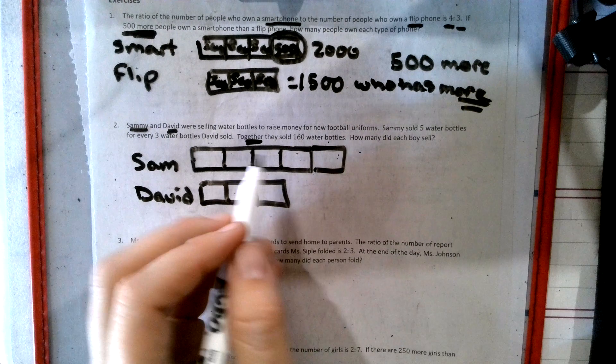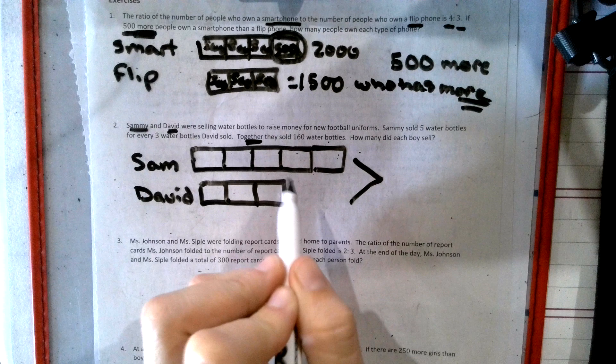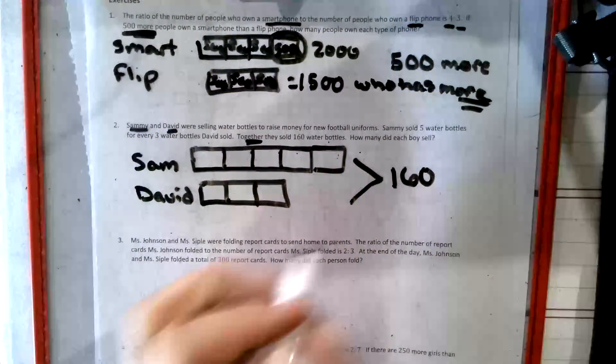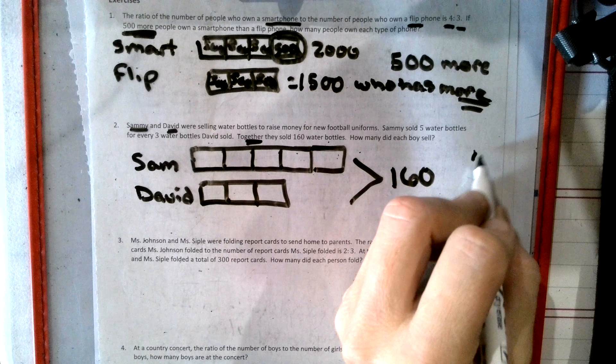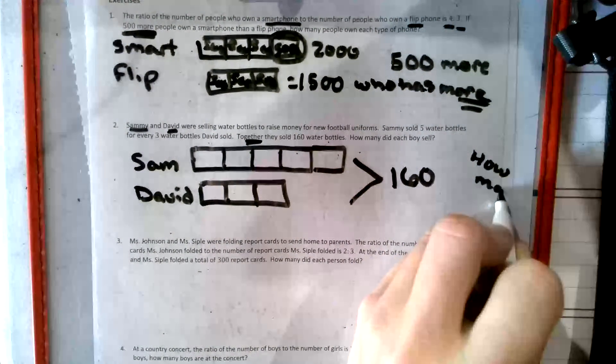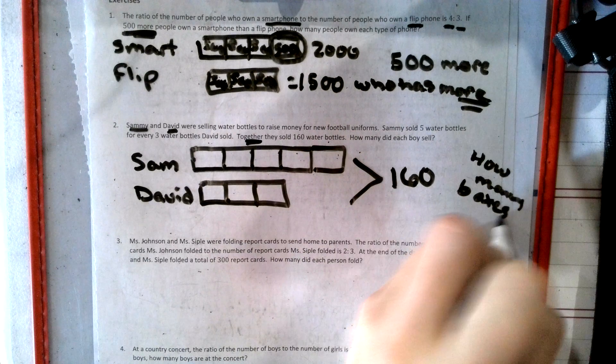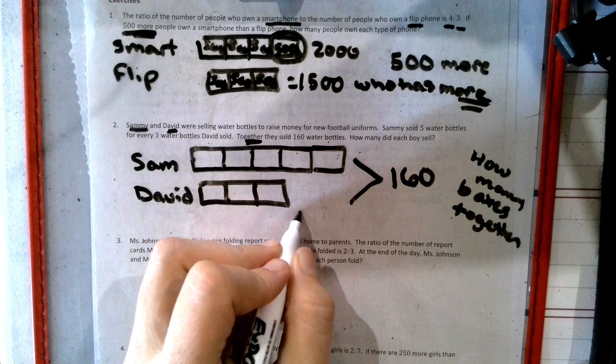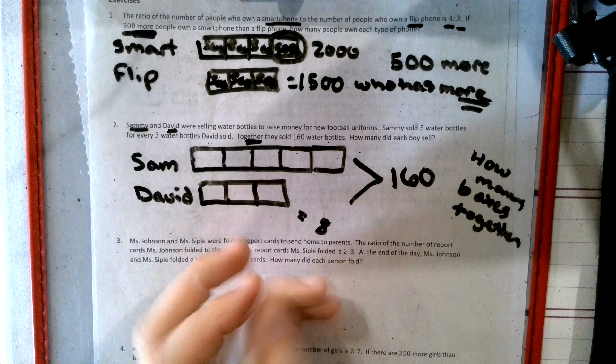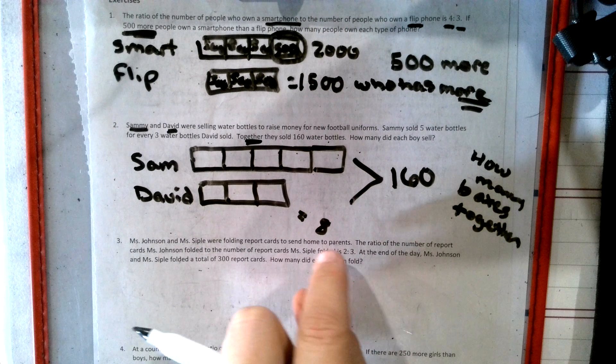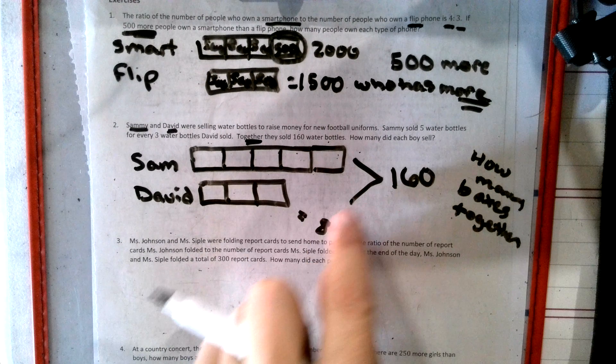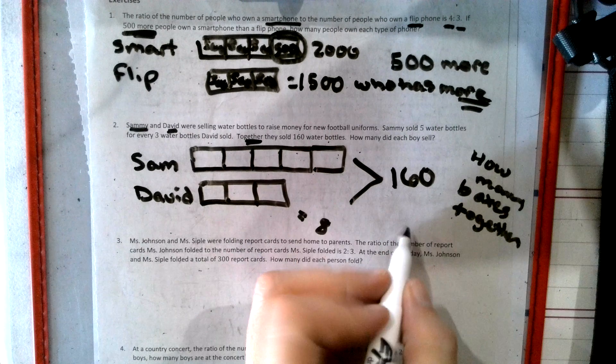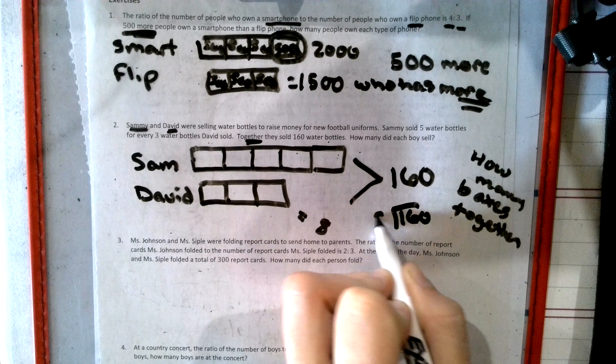It says, together. Together. So when it's a together, they sold 160. How many together boxes do they have? Like how many boxes together? So they have, Sammy's got five, he's got three. They have a total of eight boxes. See how that is? They have a total of eight. So if they have eight boxes, we now have to divide the 160 total together with the together number to find out what's going in each box.